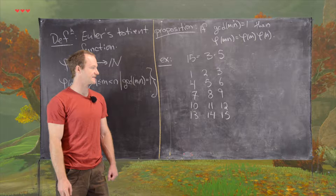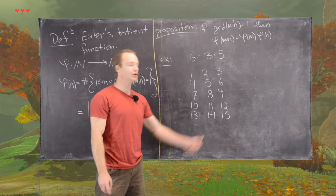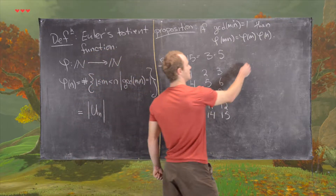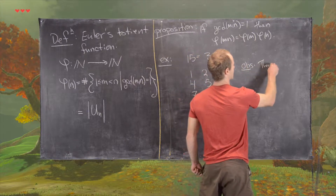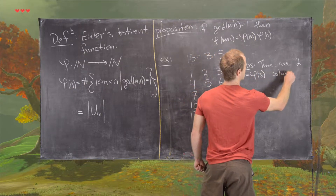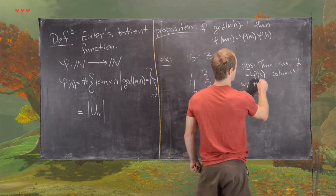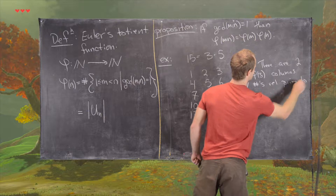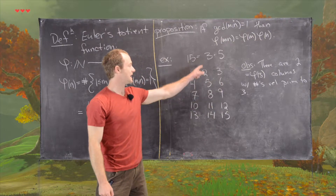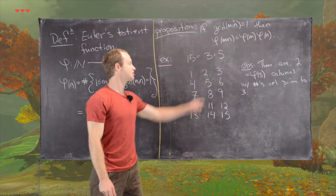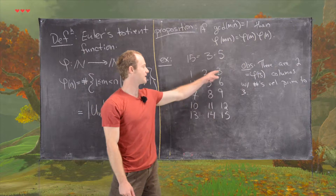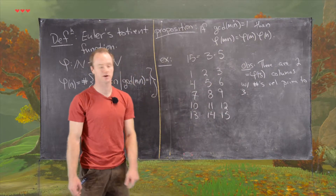Notice that there are exactly two columns that contain numbers relatively prime to 3. That's phi(3) = 2 columns. This is because each number in the same column has the same residue mod 3: one column is 0 mod 3, another is 2 mod 3, and another is 1 mod 3.